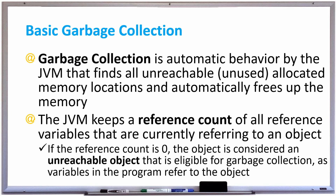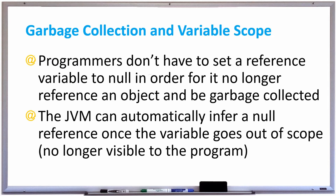The JVM keeps a reference count of all reference variables that are currently referring to an object. If the reference count is zero, the object is considered an unreachable object that is eligible for garbage collection. Programmers don't have to set a reference variable to null in order for it to no longer reference an object and be garbage collected.